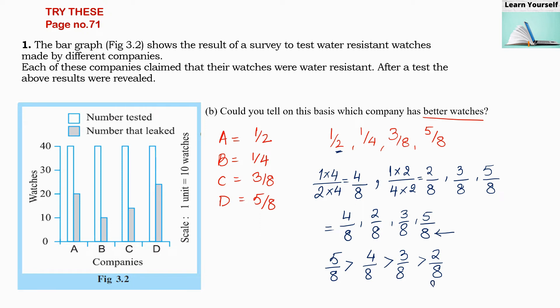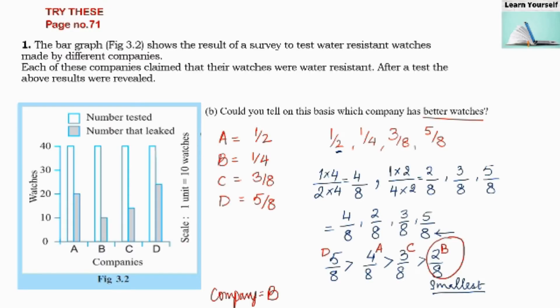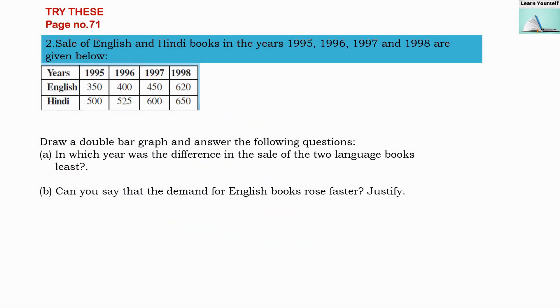So 2/8 is the smallest fraction. Now let us identify which companies these are. 5/8 is company D, 3/8 is company C, 2/8 is company B, and 4/8 is company A. That means company B has the smallest fraction of leaked watches, so we can say that company B has the best watches.